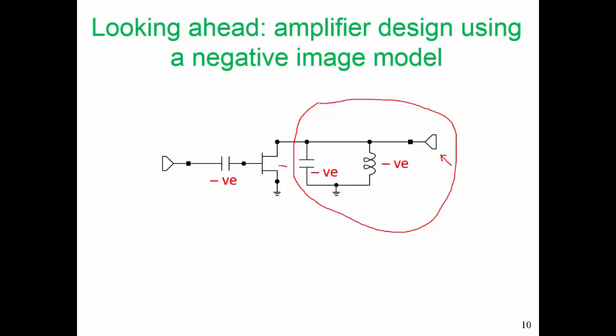Another way of looking at how we arrive at that image network at the output is to imagine what we see looking into our discrete transistor. Our discrete transistor will have bond wire inductance, and it will have capacitance. The capacitance we cancel with a negative capacitor in the output matching network. The bond wire inductance we cancel with a negative inductor, and this resistance is the value that we need for maximum power transfer.